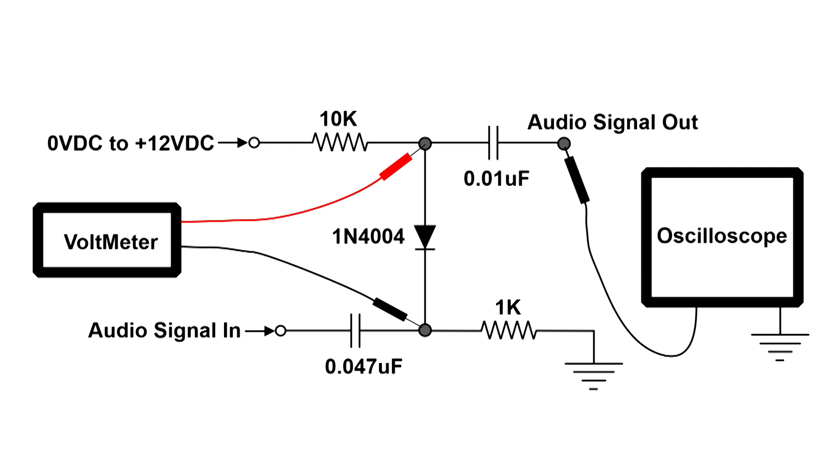All it is is a 10k ohm resistor, a diode, and a 1k ohm resistor, all in series between a 0 to 12 volt power supply. Our input signal is going to be impressed upon the bottom of that diode, or the top of the 1k ohm resistor, and the output is going to be on the other side of the diode.